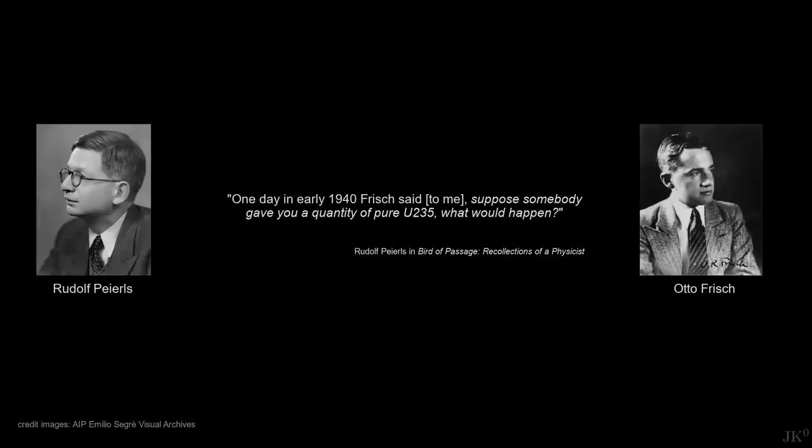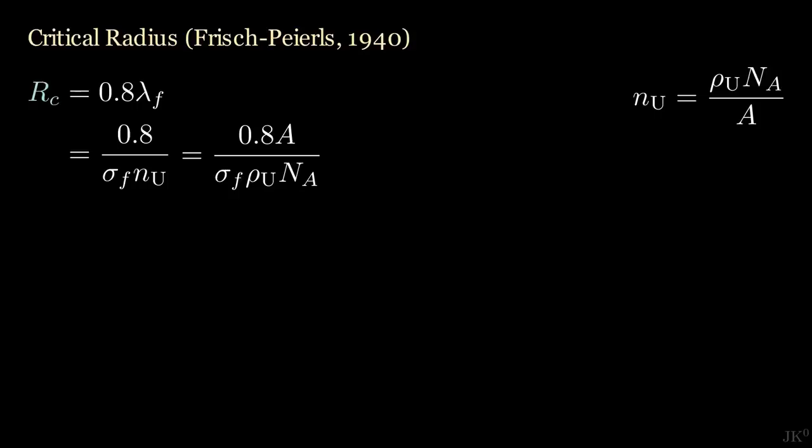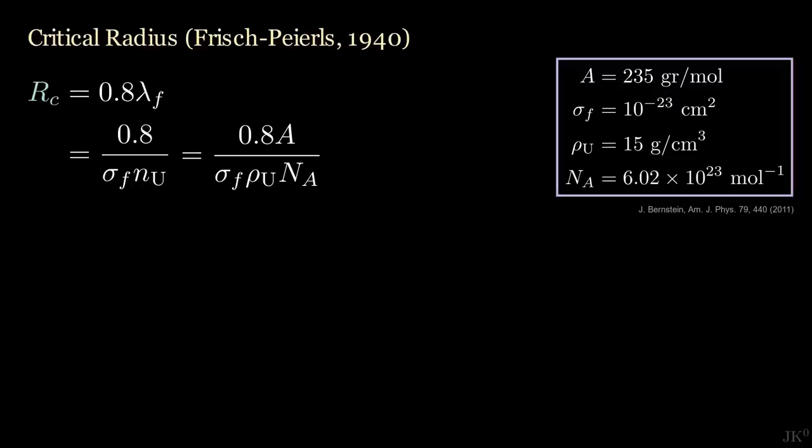From the solution of the diffusion equation, they found that the critical radius for uranium-235 is approximately 0.8 times the fission mean free path. Plugging these definitions, we find that the critical radius can be written as 0.8 divided by the fission cross section and uranium number density. Relating the number density to the mass density using Avogadro's number, we finally get the critical radius to be 0.8 times the molar mass of uranium-235 divided by the fission cross section times the uranium density times Avogadro's number.